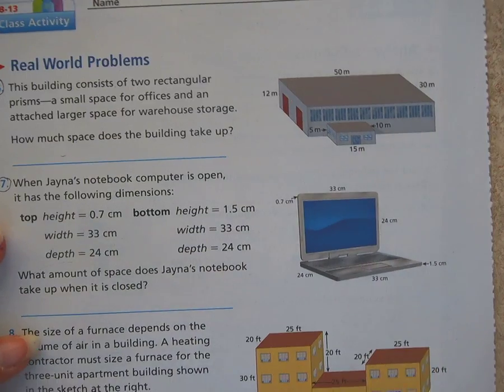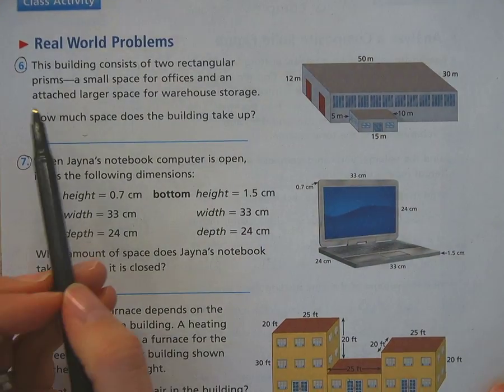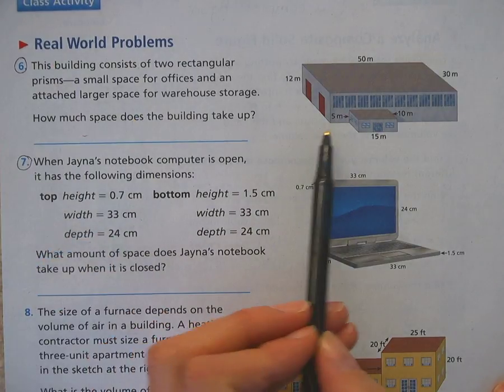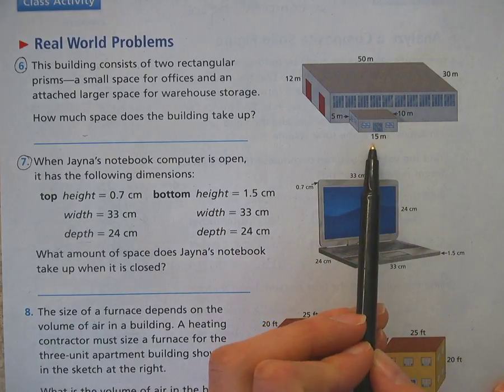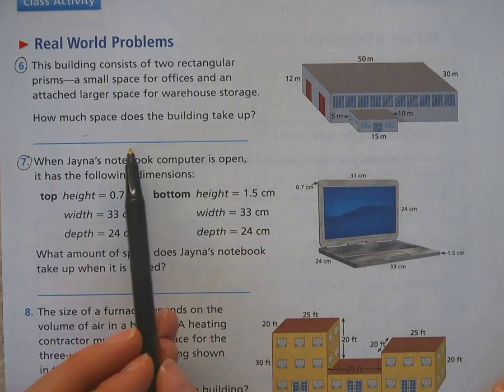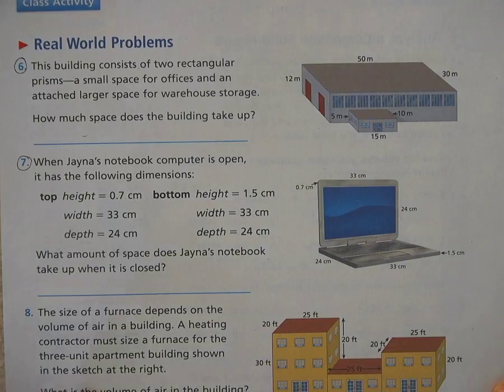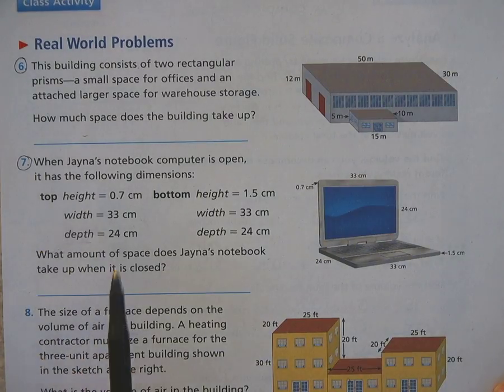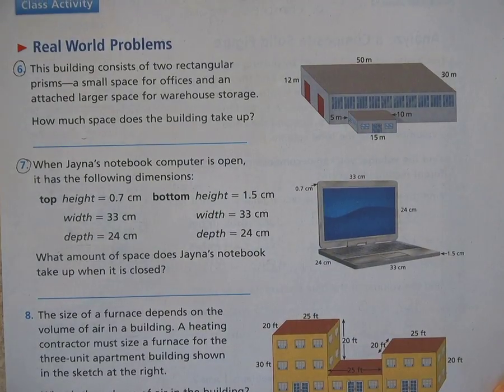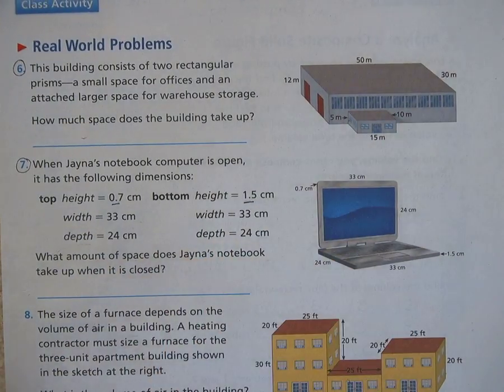On the back side, you have two more on your own problems. We would like you to see how these can be real-world situations here. So you're going to notice that you have a building that makes up two different rectangular prisms. So you're going to break up here and here, and come up with the total volume again. So you might see some work off to the side. And then number seven as well, you have to come up with the top part of the computer and then the volume of the bottom. Pay careful attention. This is 0.7, 1.5. So there is a couple decimals in there.